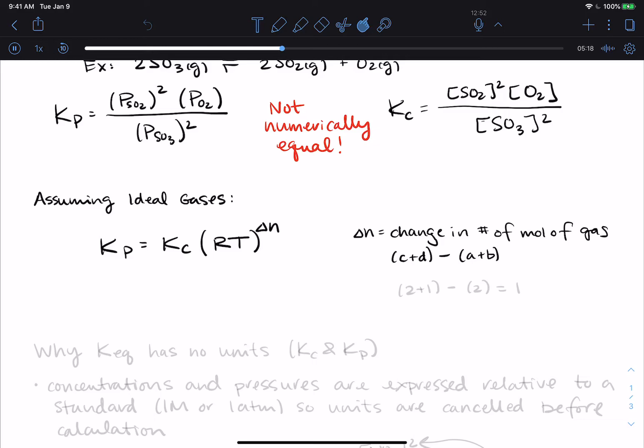So in this example that we just did, the SO3, SO2, O2, the product coefficients are two plus one. The reactant coefficients, it's just a two. So my delta n here would be one. This is how you would do that calculation. You will see some examples of this in the problem set for this module.